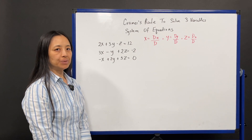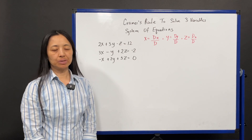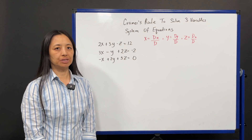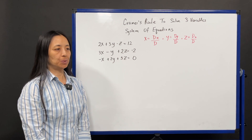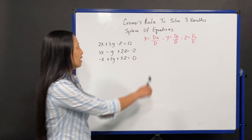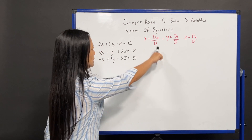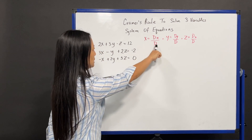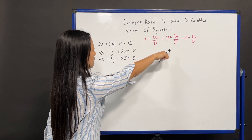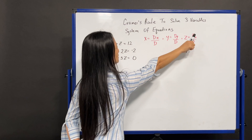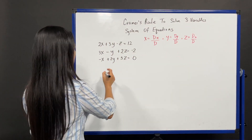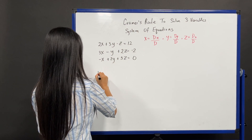Hi there. In this video, we're going to use Cramer's rule to solve a system of linear equations for three variables. To find x, y, and z, we're going to need to find a determinant D, and D of x, D of y, and D of z. We're going to start with the determinant D first.